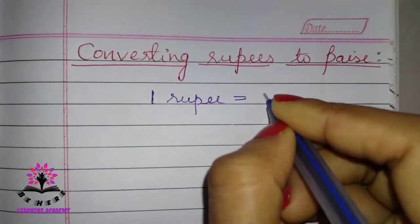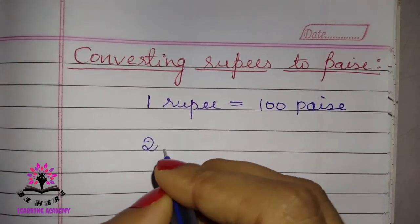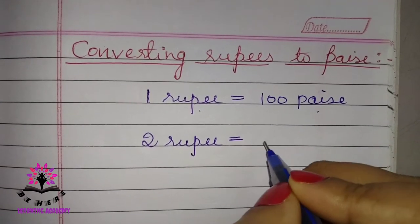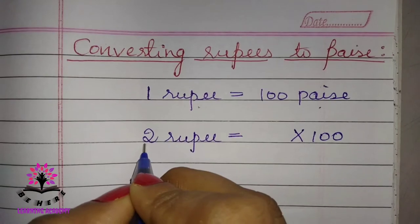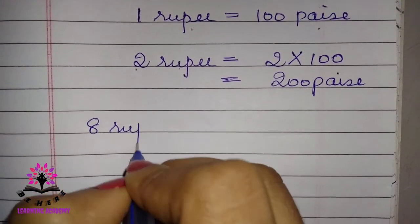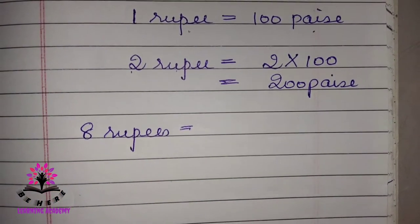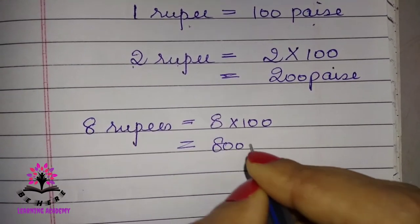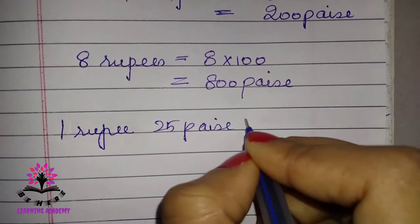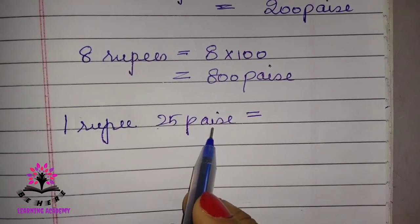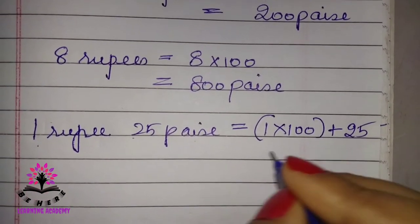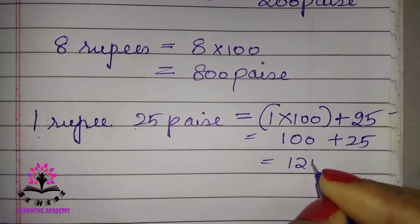You know that 1 rupee is equal to 100 paisa. To convert rupees to paisa, you multiply by 100. So 2 rupees equals 2 × 100 = 200 paisa. For 8 rupees: 8 × 100 = 800 paisa. For 1 rupee 25 paisa: (1 × 100) + 25 = 100 + 25 = 125 paisa.